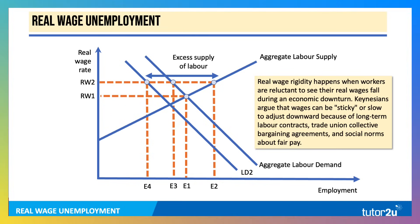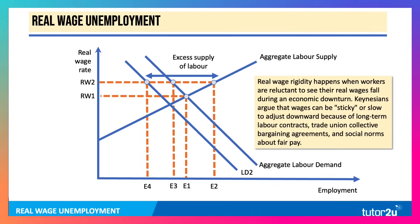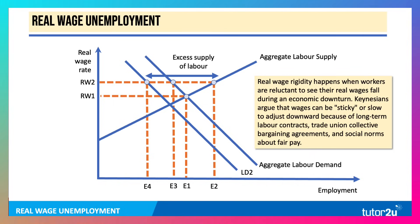Here an inward shift of aggregate labour demand is shown. Normally wages would fall on the back of that, but if real wages stick at RW2, then we get a further fall in employment from E3 to E4. The risk is that higher real wages in a downturn might accentuate or amplify the loss of jobs.